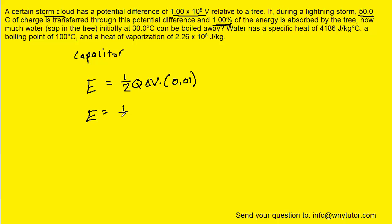So we'll go ahead and fill in the known values for the charge and the potential difference. And when we compute that, we should get 2.5 times 10 to the power of 7 joules. This is the amount of energy that's going to be absorbed by the water present in the tree.